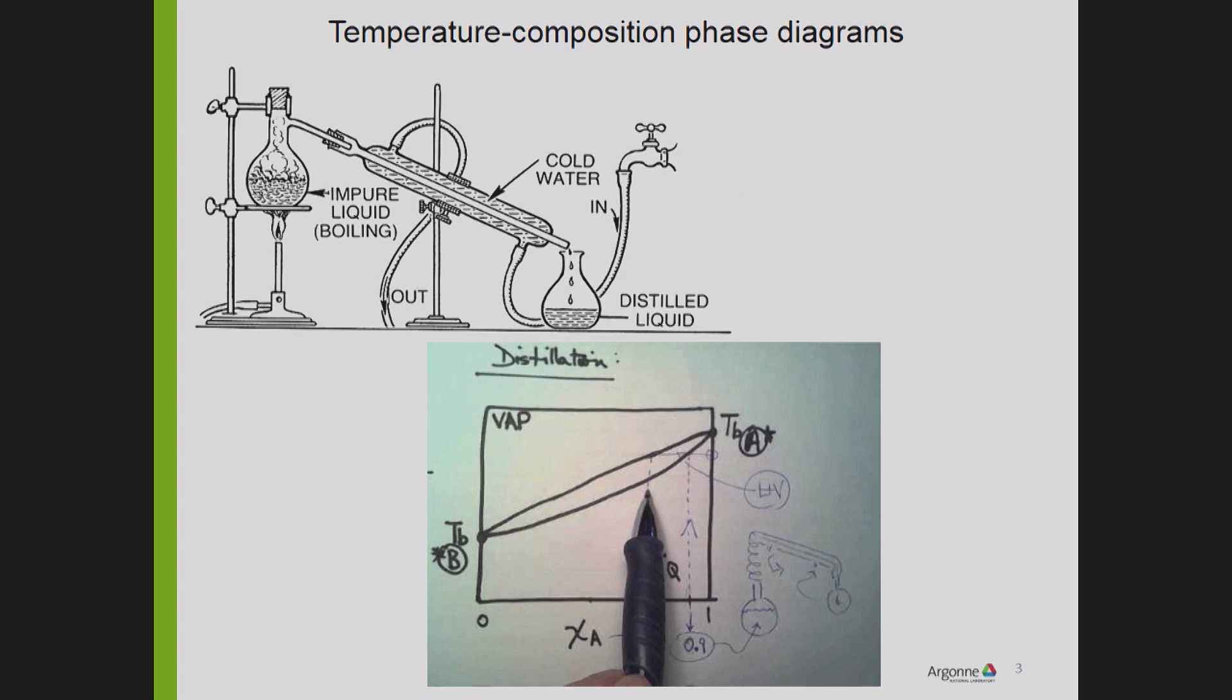But it is a simple diagram. Vapor's up there, the liquid on the lower side, the melting points, and the mixture of vapors and liquid in this area. So not too complicated, you may think. And humans are quite good at drawing all kinds of things, including phase diagrams.